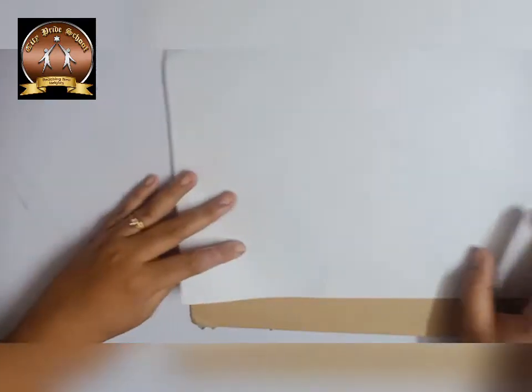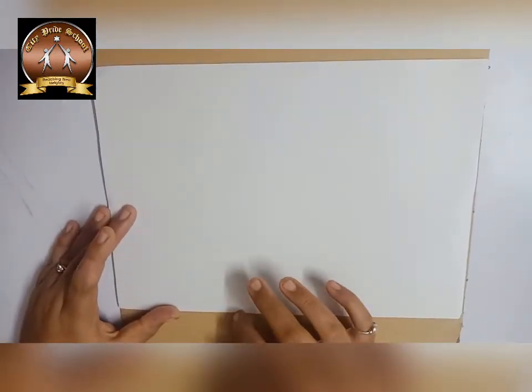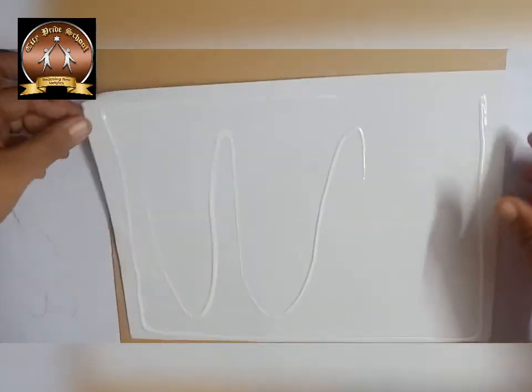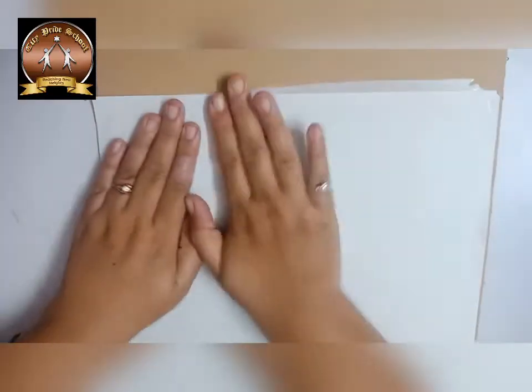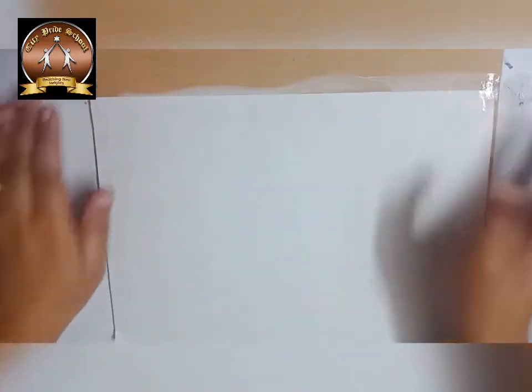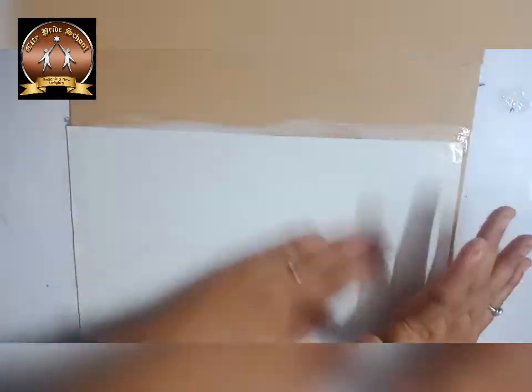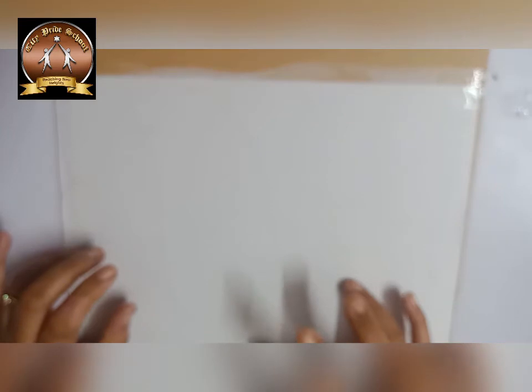First we are going to paste this paper on the cardboard with the help of favicol. If we cut the shape of the mask first, it is very difficult to paste the pulses on that. This technique will help us. You have to press it properly. If you don't use cardboard, your mask will not get the stiffness.